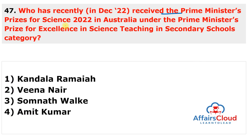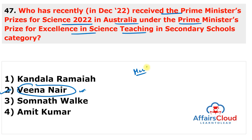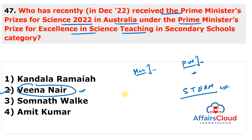Question 47: Who received the Prime Minister's Prize for Science 2022 in Australia under the 'Excellence in Science Teaching in Secondary Schools' category? The answer is Veena Nayar, an Indian-origin teacher in Melbourne. Veena Nayar, STEAM team project leader and head of technology at Viewbank College in Melbourne, was honored for demonstrating the practical application of STEAM to students. The PM Prize for Science is Australia's most prestigious prize for outstanding achievement in scientific research and science teaching.